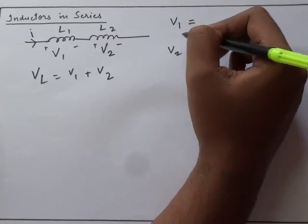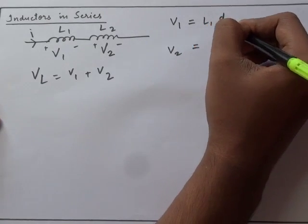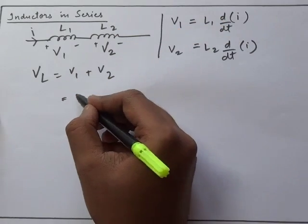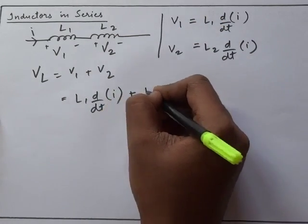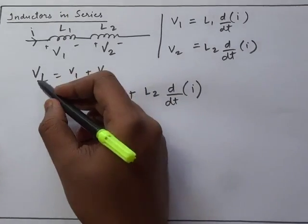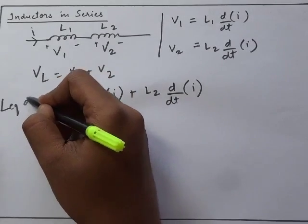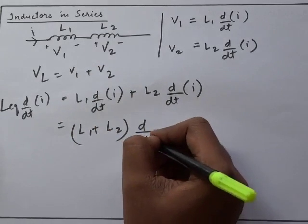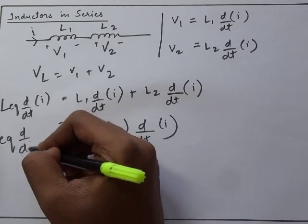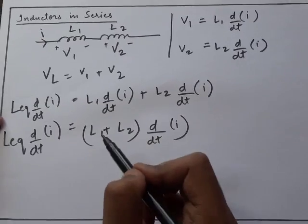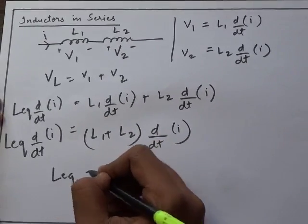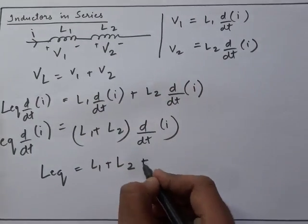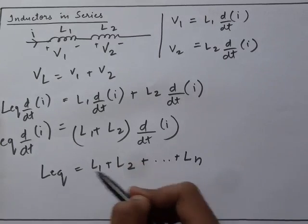We need to find out values for V1 and V2. V1 = L1(dI/dt) and V2 = L2(dI/dt), no need to change I because current is same in both cases. Substituting these two here: L1(dI/dt) + L2(dI/dt), and for VL I can write Leq(dI/dt). Taking (dI/dt) common, I get (L1 + L2)(dI/dt). Comparing left hand side and right hand side, we can write: Leq = L1 + L2. That means when inductors are connected in series we just add them up, and assuming N number of inductors we can extend this to LN.